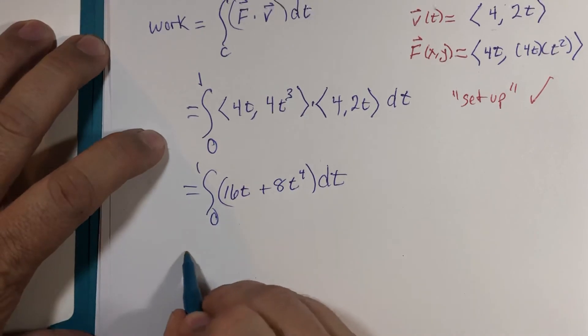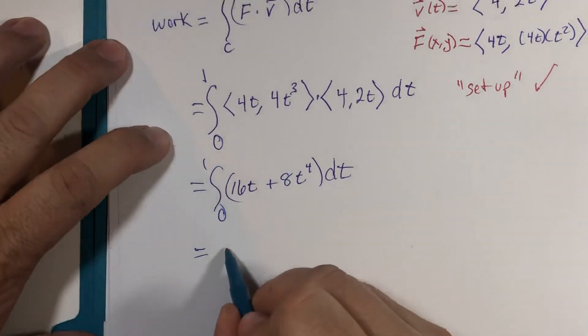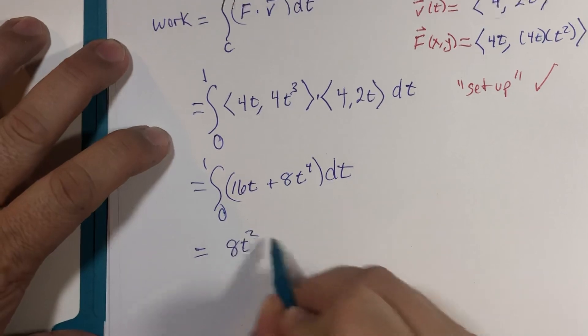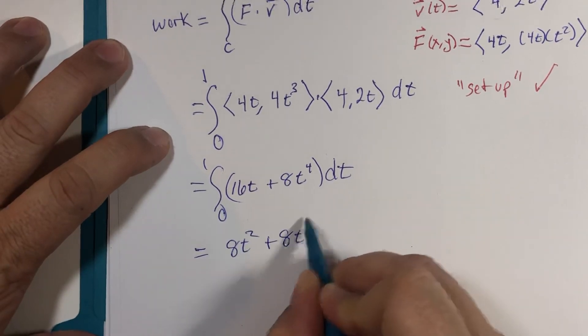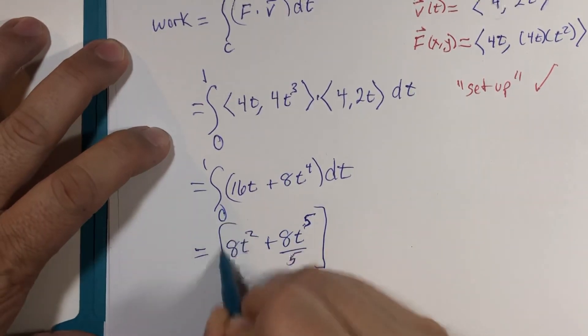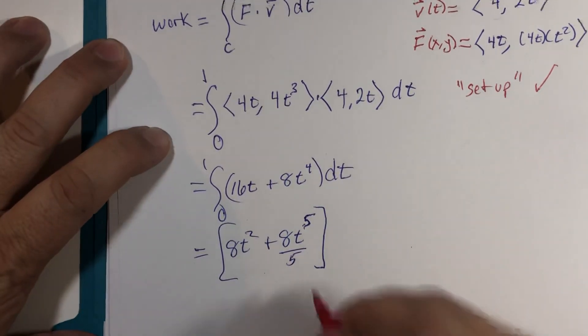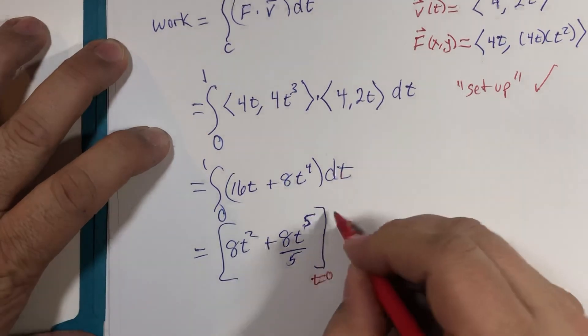That is 8t² plus 8t⁵/5, and t goes from 0 to 1.